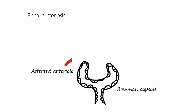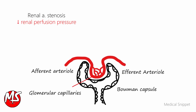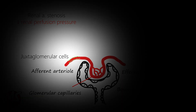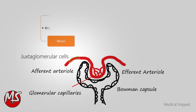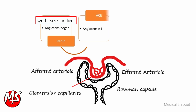In renal artery stenosis, there is a decrease in renal perfusion pressure. This causes juxtaglomerular cells, located in the walls of afferent arterioles, to secrete renin. Renin secreted from the kidney converts angiotensinogen — synthesized in the liver — into angiotensin 1.